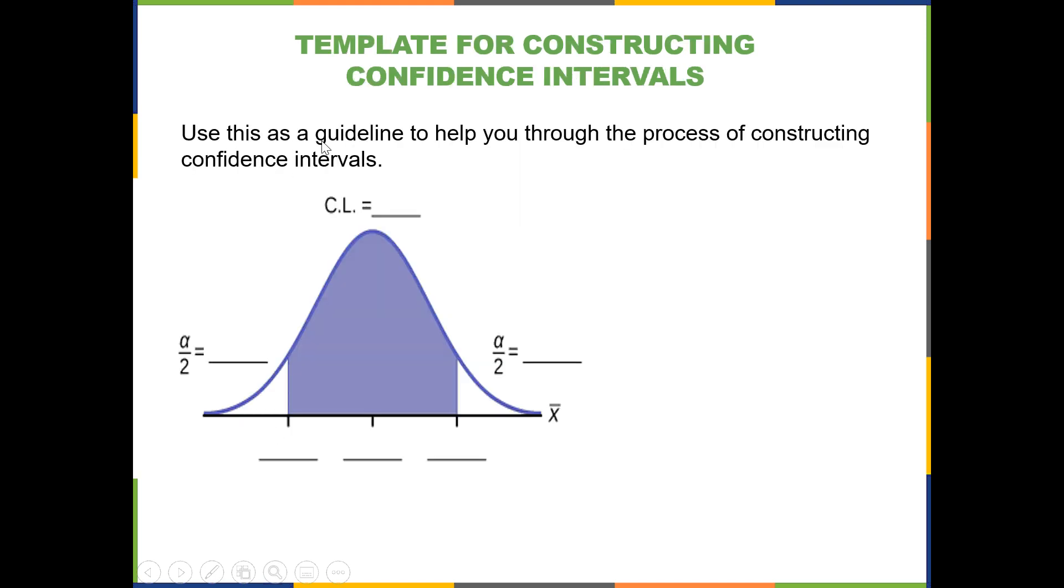Now, once you've decided which formula to use, you can use this as a guide to help you through the process. You will choose the sampling distribution z or t. In other words, choose which formula you're going to use for your margin of error. Then find the critical values and add them to the sketch.